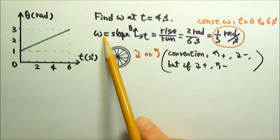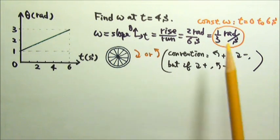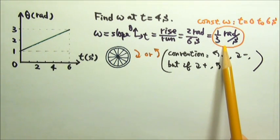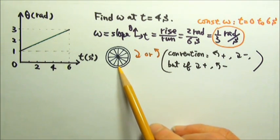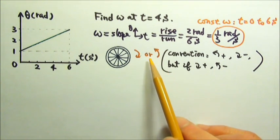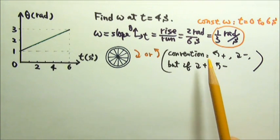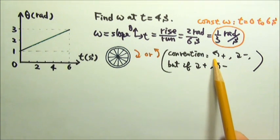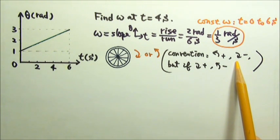By the way, angular velocity, just like velocity, is a vector. So it has a magnitude and a direction. The sign here tells us about direction. Usually, if the wheel is like this, we can just use clockwise or counterclockwise to specify its direction of rotation. The convention is to use positive for counterclockwise and negative for clockwise direction.